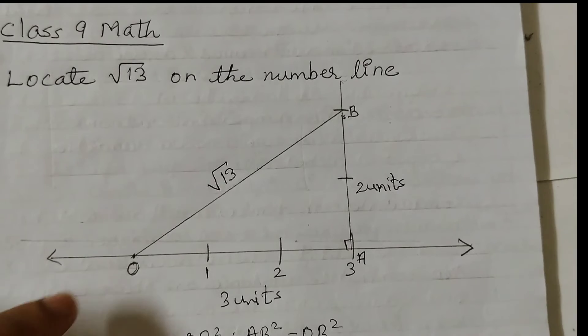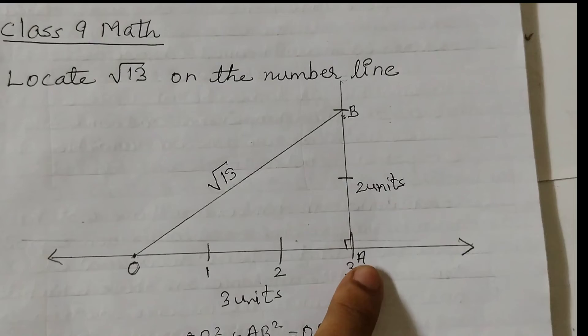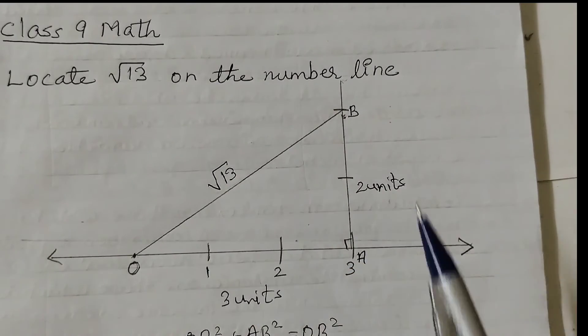Using a compass with center O and radius OB, draw an arc which intersects the number line at point C.